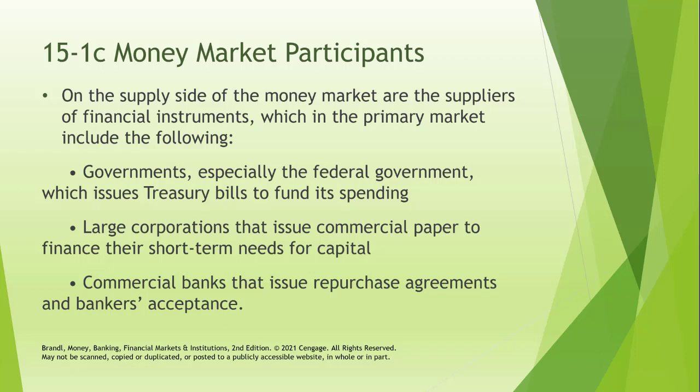Commercial banks also issue repurchase agreements and bankers' acceptances — other forms of money market instruments. Large corporations also issue the equivalent of a T-bill, called commercial paper, and they often do this to finance short-term capital needs.